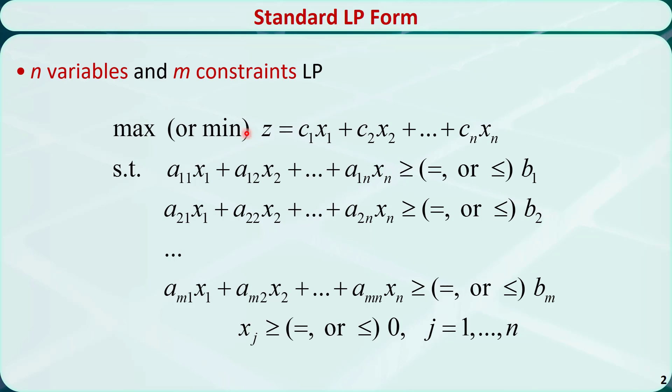This is the standard form of linear programming problems. There is a total of n variables and m constraints. It can be a maximization or minimization problem. The objective function z is equal to the sum of each coefficient cj times the variable xj.